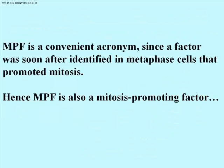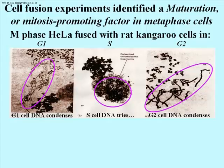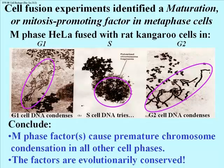MPF is a convenient acronym because a similar factor was quickly found in metaphase somatic cells. Metaphase cells could be fused with other cells in other phases of the cell cycle, and in each case the nuclei of the other cell would break down and chromatin would try to condense into chromosomes, as seen here for cells in G1 and G2. Even the chromatin of an S-phase cell tries to condense, although strands don't really form, probably because the replicating DNA makes it harder to do so. We can conclude that a factor in metaphase cells can induce the onset of mitotic events in non-mitotic cells, and the factor is conserved between rat and human cells. The factor turns out to be a regulated kinase evolutionarily related to the frog maturation promoting factor, or MPF.